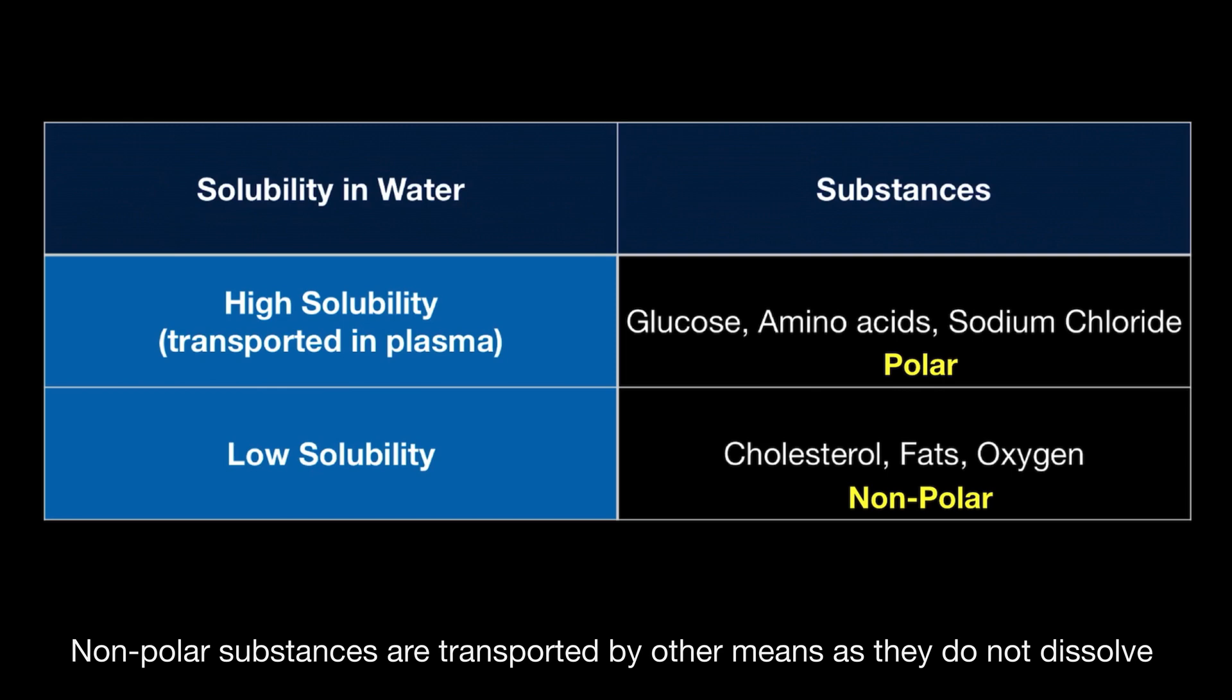For example, oxygen is transported by hemoglobin in red blood cells, and fat molecules may coalesce to form large droplets within the blood.